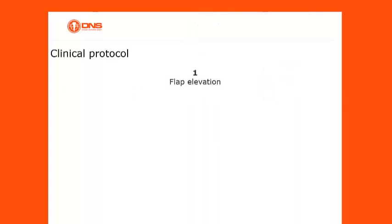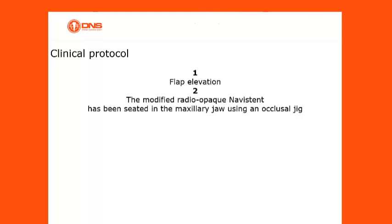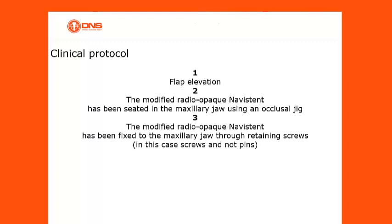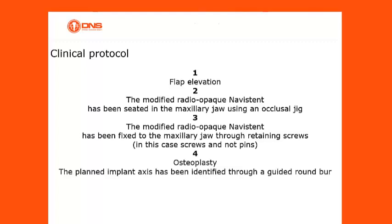The clinical protocol proceeds as follows: Step 1 — flap elevation. Step 2 — the modified radiopaque Navistent is seated in the maxillary jaw using an occlusal jig. Step 3 — the modified radiopaque Navistent is fixed to the maxillary jaw through retaining screws (screws, not pins, in this case). Step 4 — osteoplasty: the planned implant axis is identified through a guided round bur. Step 5 — guided osteotomy and guided implant placement.